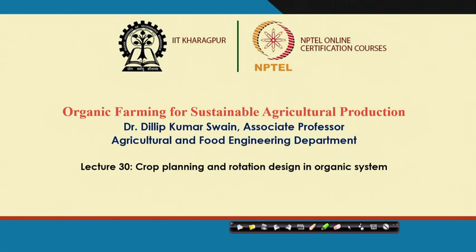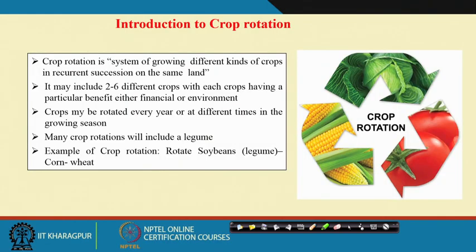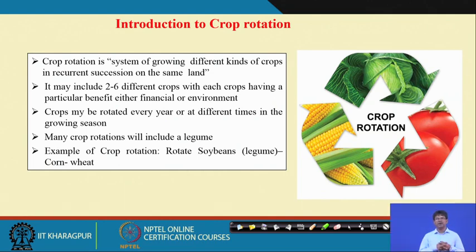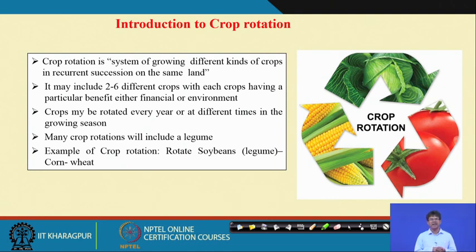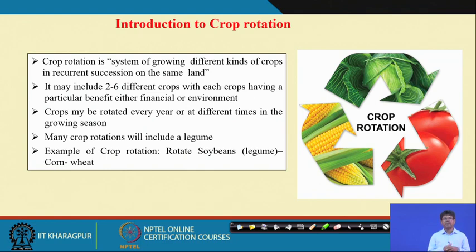In crop planning, we discuss crop rotations because they are an integral part of organic farming. Crop rotation maintains and enhances soil biological activity. In organic farming, we do not allow the same crops to be grown repeatedly year after year or season after season, because repeated crops lead to more insect pests and deteriorate soil quality. Similar crops have similar rooting systems, extracting nutrients from the same layers, making the soil less fertile over time.